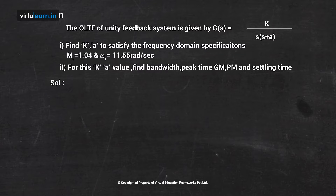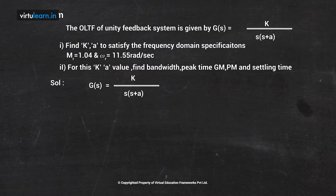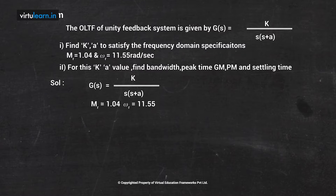We have a second order system where the open loop transfer function G(s) = k / [s(s + a)], and both k and a are unknown variables. We need to find those constants for the given specifications: Mr is 1.04 and omega_r is 11.55.